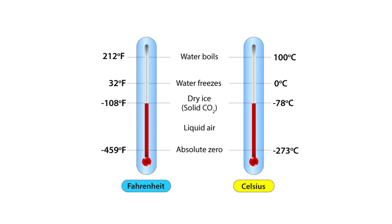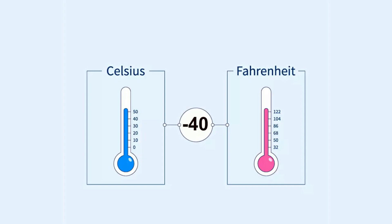The point at which the Celsius and Fahrenheit scales intersect, resulting in equal numerical values, is a topic that can be explained in a relatively concise manner. At approximately minus 40 degrees, the Celsius and Fahrenheit scales align, representing the temperature where both scales yield the same numerical value.